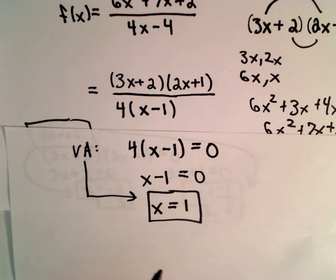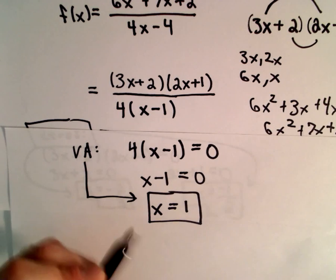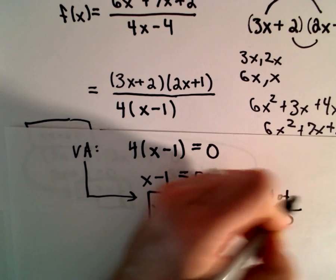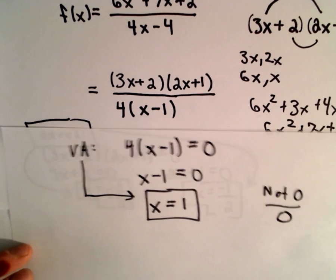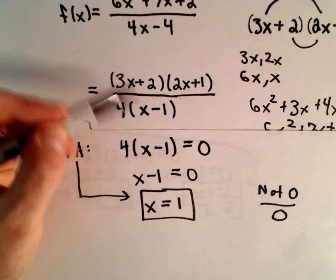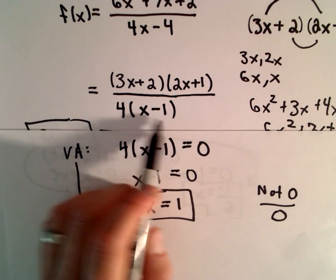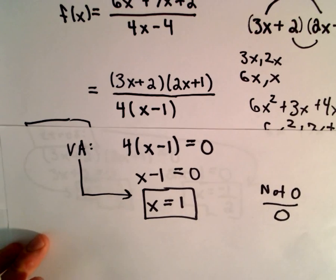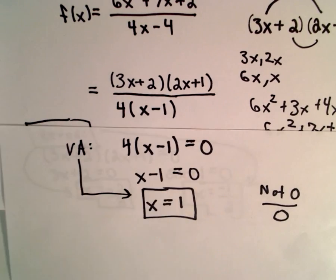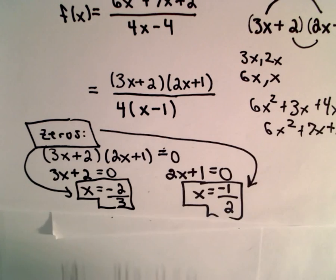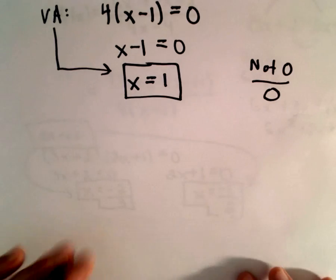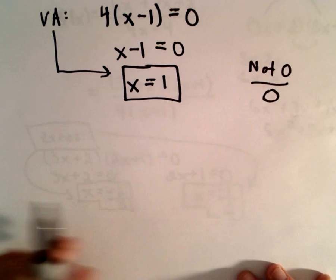Again, I made the remark in a previous example that vertical asymptotes occur when you get 0 in the denominator and not 0 in the numerator. But, since there's no common factors, I know that if I put 1 into the denominator, I'll get 0, but I definitely won't get 0 in the numerator. So, in this case, we found zeros at -2/3 and -1/2, and our vertical asymptote was at x = 1.